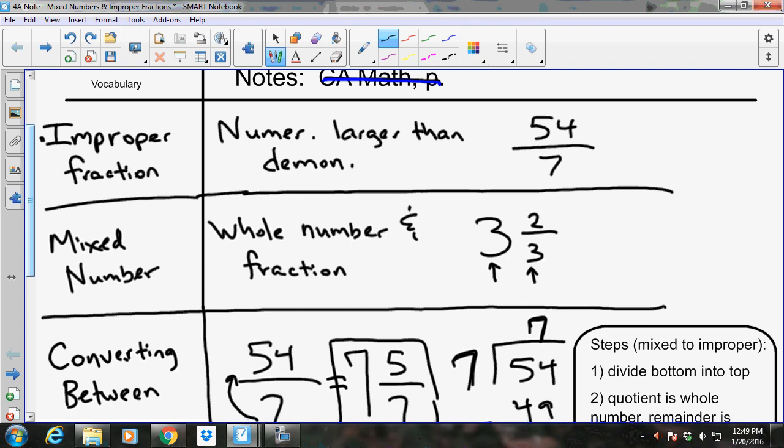Improper fraction. An improper fraction is when the numerator is larger than the denominator. So there's an example right here, 54 over 7. 54 is bigger than 7 and 54 is on the top. So that's an improper fraction.